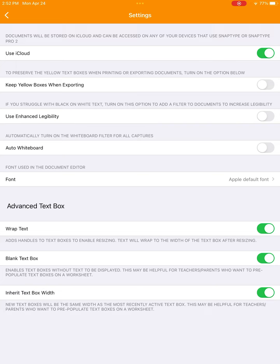Here you can enable text wrapping, blank text boxes, and to speed up teacher support, you can also inherit the text box width. I'll talk more about that in a minute. Now let's go back to our worksheet and add a new text box.